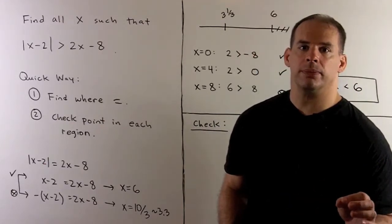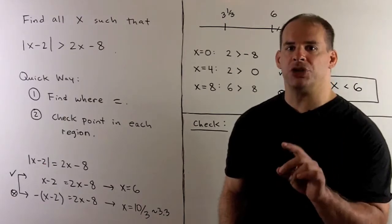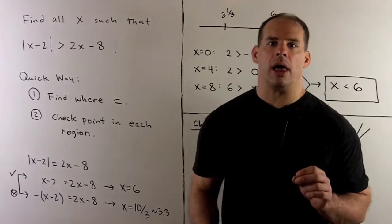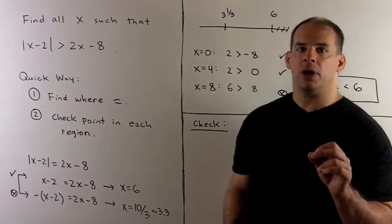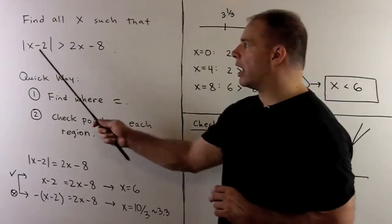We'll have two solutions. For the long method, we'll pull apart the definition of absolute value of x minus 2 and solve the corresponding inequalities. For the quick method, we'll exploit the continuity of the functions on each side of the inequality.